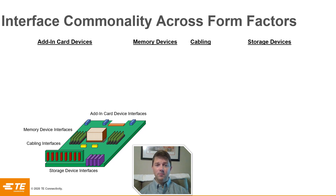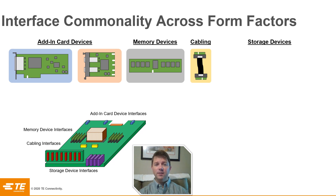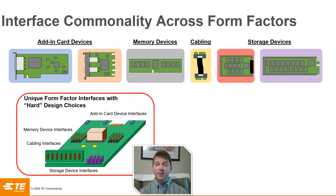Within a given system are a variety of form factors and interfaces. We have add-in card devices, memory devices, cabling interconnect, and storage devices. Each of these may come with a different interface and a different design rule and performance criteria that may limit system workload options based on the limitations of the interface and the physical size of each of the technologies assigned to each form factor, and is limited to each independent interface. This creates a scenario of hard design choices.